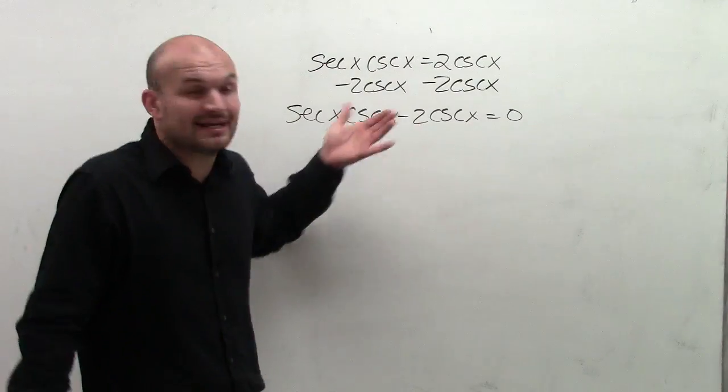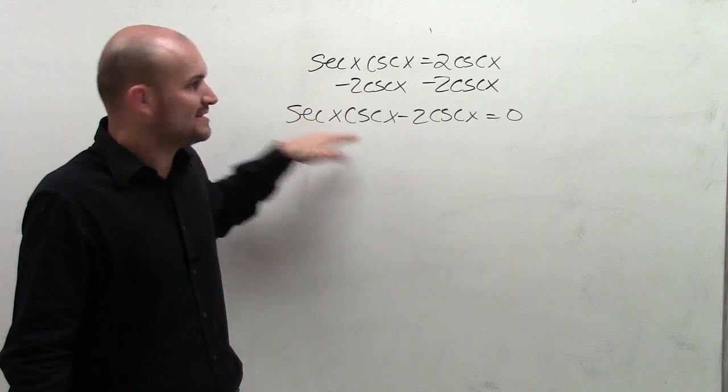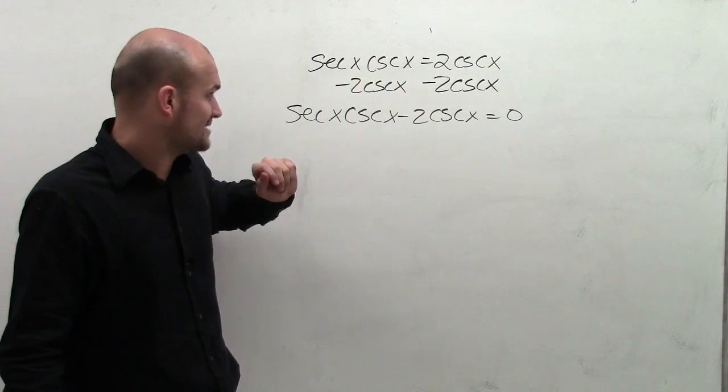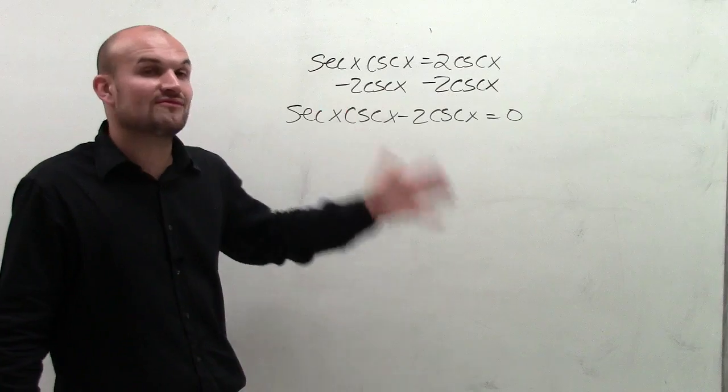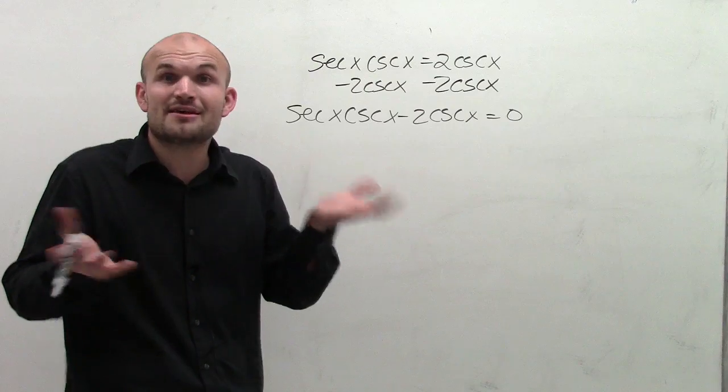Now, I want to see, can I combine my terms? And I can't because this cosecant is being multiplied by secant, so I can't combine it with the other cosecant. And I have two different types of functions. I can't isolate one variable or combine like terms, so the next thing I want to look into is factoring.